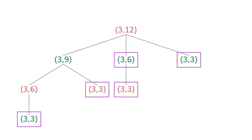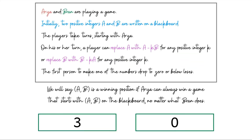Hopefully you're convinced that the notion of a winning position is sensible. Let's practice with examples. Suppose you have 1 and 42, and it's Arya's move — is this a winning position? If one number is 1 and the other is x greater than 1, you can subtract x minus 1 copies of 1 from x, reaching configuration (1, 1), which is losing for the other player. So whenever one number is 1, the first player can win in just one move.